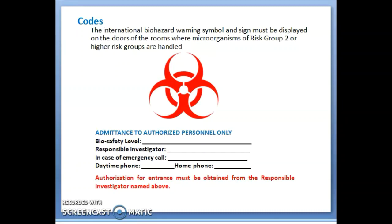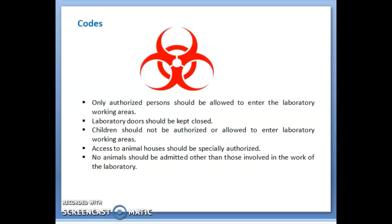Authorization for entrance must be obtained from the responsible investigator named on the admittance card. Only authorized persons should be allowed to enter the lab working areas. Lab doors should be kept closed. Children should not be authorized or allowed to enter laboratory working areas. Access to animal houses should be specially authorized, and no animals should be admitted other than those involved in the work of the laboratory.